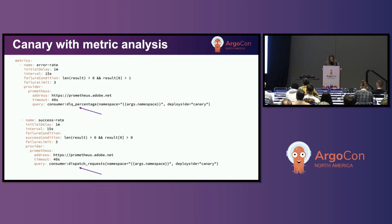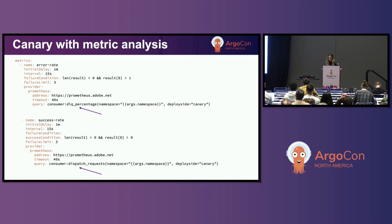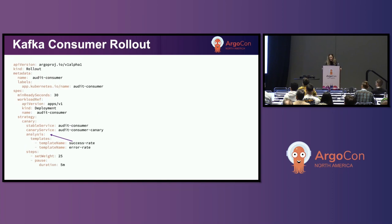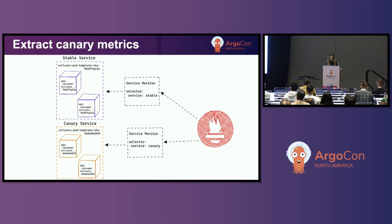The second metric assesses that we are actually producing events to the data store. Both metrics have an initial delay of one minute to allow for the canary pods to be up and running, and to allow for a first consumer group rebalance as the canary pod is added to the consumer group. These two metrics are then referenced from the Rollout spec of my Kafka consumer Rollout, and they are referenced as background analysis, meaning they will run for the entire duration of the Rollout.